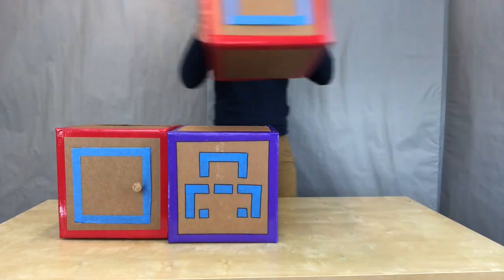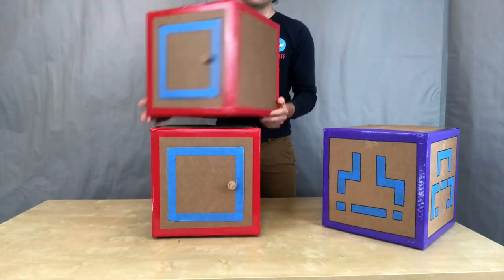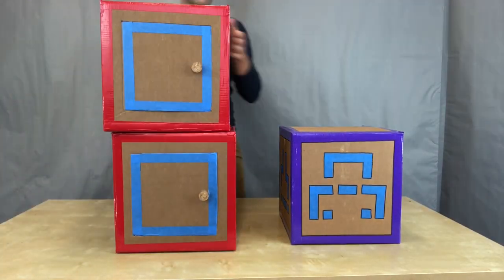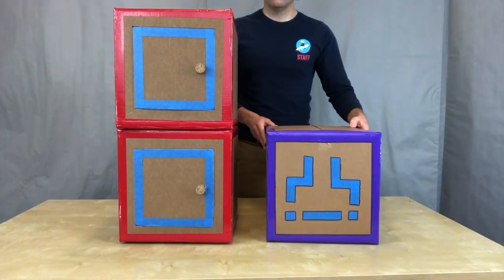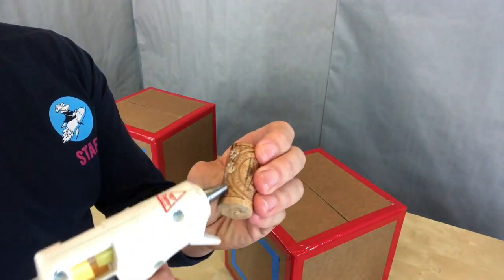With my cabinets and seat now done, I could think about different ways to arrange them—either connected or not connected. Ultimately I decided that it'd be most useful to have the seat separate and the cabinets stacked on top of each other.